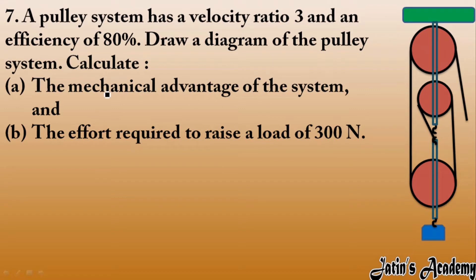Now we have to calculate the mechanical advantage. We have efficiency given as 80 percent, so efficiency equals mechanical advantage over velocity ratio. Efficiency we have 80 percent means 0.8. Mechanical advantage, MA, we have to calculate, and velocity ratio for this block and tackle system we have 3.